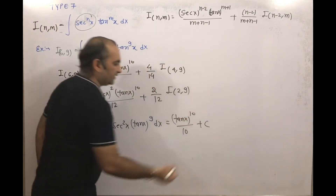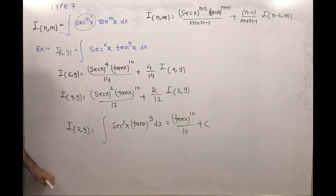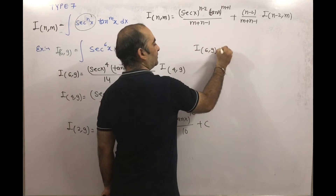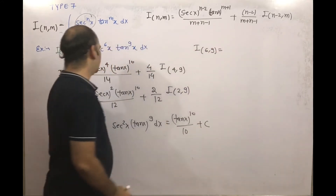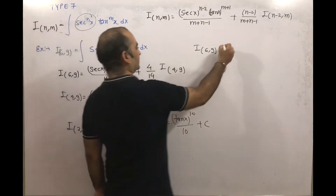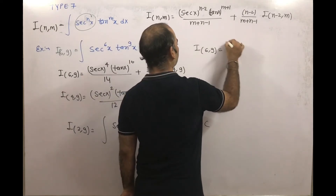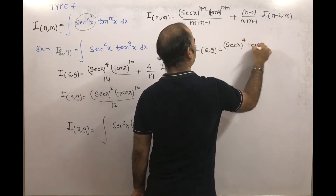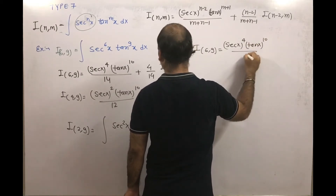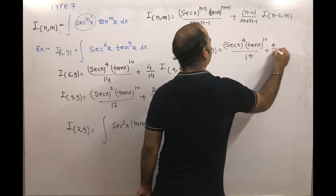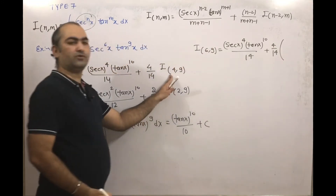So this is nothing but tan x to the power 10 divided by 10, plus C. Now I(6, 9) equals sec x to the power 4 into tan x to the power 10, divided by 14.